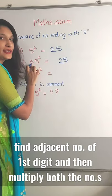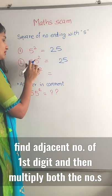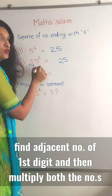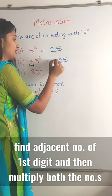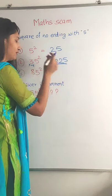We will need to find the adjacent of the first digit. The adjacent number of 3 is 4, so we multiply 3 by 4. 3 into 4 is 12, so the answer is 1225.